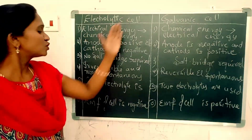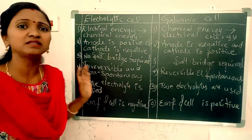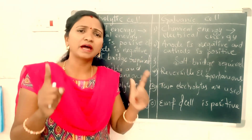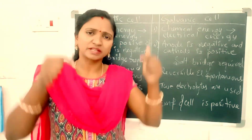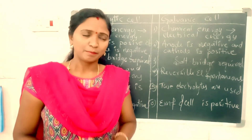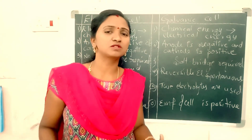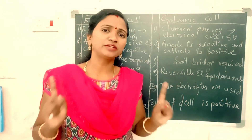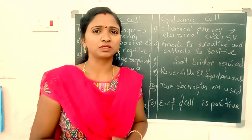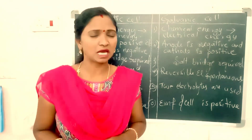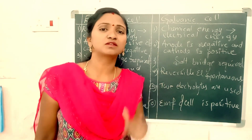The fifth difference: in the case of electrolytic cell, only one electrolyte is used, because both cathode and anode electrodes are placed in the same single electrolytic solution. But in the case of galvanic cell, there are two half cells, and each electrode is dipped in its own separate electrolytic solution — so two different electrolytic solutions are required.